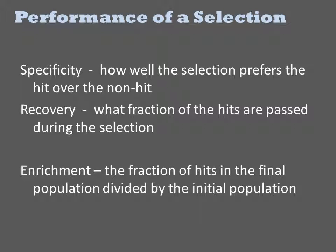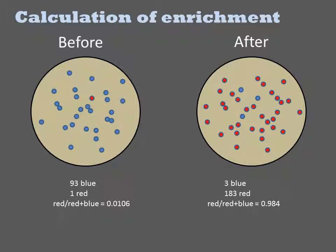Let's do an example of how enrichment is calculated. The calculation of enrichment requires that you follow the frequency of the hits within your population before and after selection. Let's consider the scenario of a cell that turns fluorescent red when a hit is present, and is blue otherwise. If we dilute and plate around 100 colonies of the naive library on a plate, we can count the red and blue colonies and calculate the frequency of reds in the population. Now we apply a selection, such as FACS sorting, and repeat the plating experiment. Now we see that the frequency of reds is much higher. If we take the frequency after selection and divide by the frequency before selection, we get the enrichment, which here would be 92.